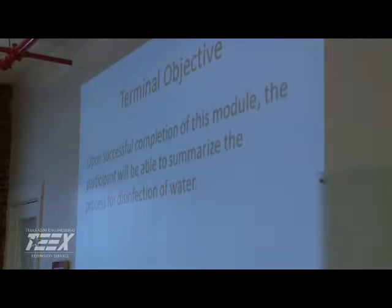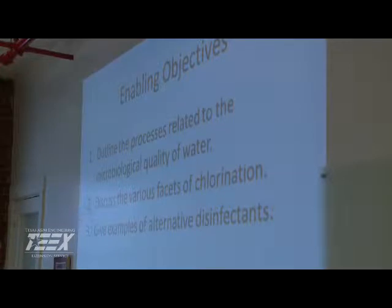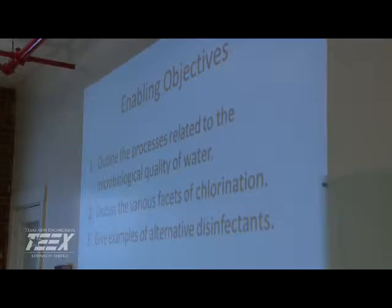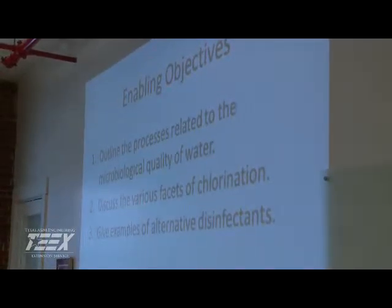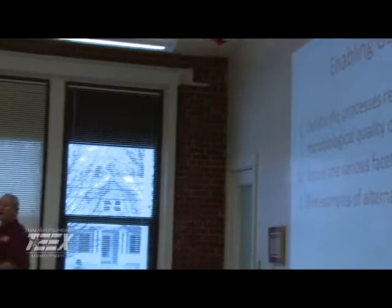The enabling objectives: we want to be able to outline the processes related to the microbiological quality of the water. We're going to talk about quality in relation to BAC-T — what types of bacteriological contaminants can be out there. We'll discuss the various facets of chlorination, then give examples of alternative disinfectants — that could be ozone, UV, or natural processes. We can use potassium permanganate, iodine, bromine, and others. But why do we use chlorine? Because it produces the least amount of adverse effects on the water quality.